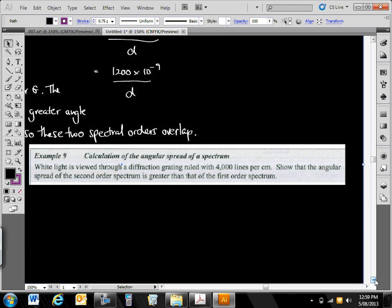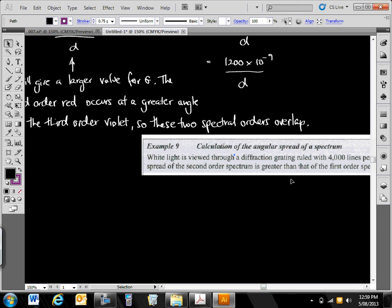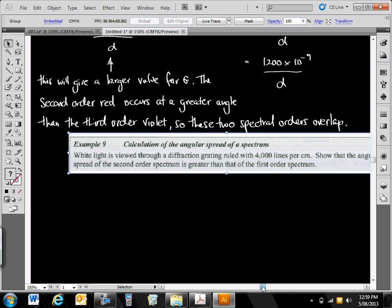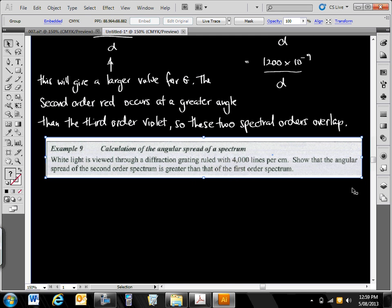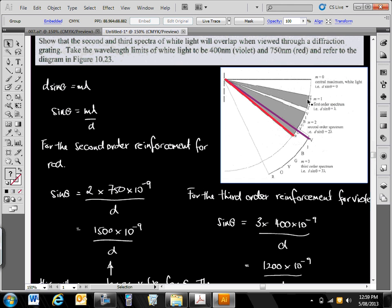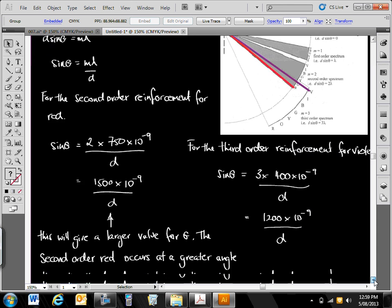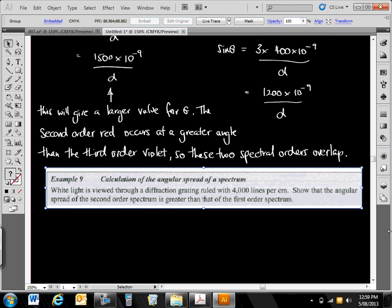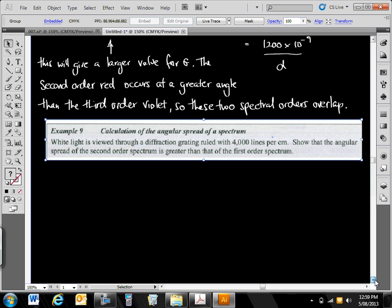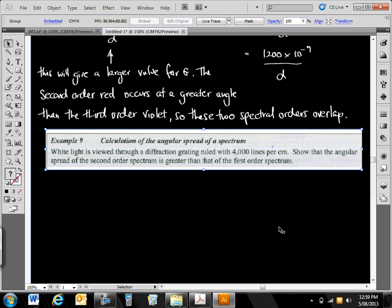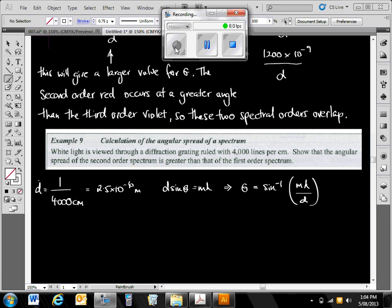Calculation of the angular spread of a spectrum. Remember that this diagram 10.2.3 shows that as we go to different order of spectrums, or we increase the order of spectrum, the angular spread gets larger. White light is viewed through a diffraction grating ruled with 4,000 lines per centimeter. Show that the angular spread of the second order spectrum is greater than that of the first order spectrum. How would you do that? Yes, find the red and violet angles for both of them, that's right. Do a simple calculation, and you've got it.